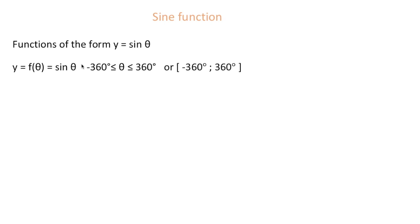With trig functions, you'll be given an interval where the function is defined. This one is: negative 360 is less than or equal to θ, which is less than or equal to 360. This is an inequality form. It can also be given in interval form, where the square bracket means including minus 360 as the smallest value, ending with 360 — the square bracket there means including 360.